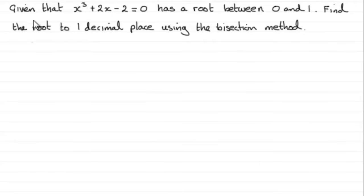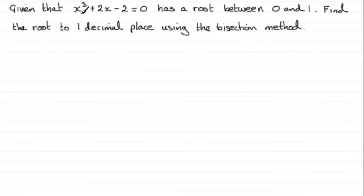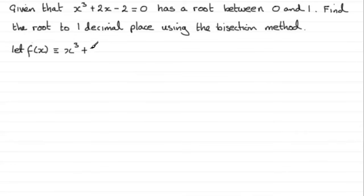So how does this work? We've got an example here. We're given that x cubed plus 2x minus 2 equals 0 has a root between 0 and 1, and we've got to find this root to one decimal place using the bisection method. What you would normally do is make sure your equation equals 0, then define some function f of x to be identical to the left-hand side — in this case, x cubed plus 2x minus 2.